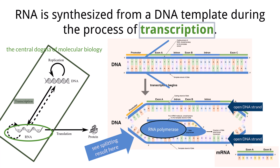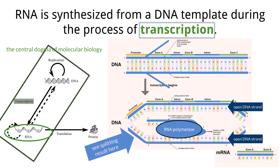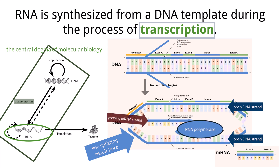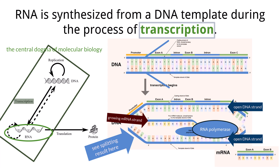The RNA polymerase then moves along the template strand of DNA and allows for the attachment of RNA nucleotides. This creates a growing strand of messenger RNA along the template strand, and the RNA polymerase facilitates the linking of the backbone of the messenger RNA so that it is one complete molecule.